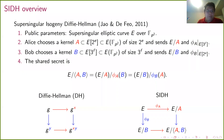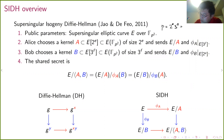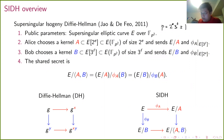In SIDH we use supersingular elliptic curves, starting with a single supersingular elliptic curve defined over 𝔽_{p²}. Not every p works — you need a prime of a particular form. It's a key exchange: Alice and Bob each choose a secret, which is the kernel of an isogeny, and publish a public value that is roughly speaking the codomain of that isogeny. My notation is E/K for the codomain and φ_K for the isogeny attached to that kernel.